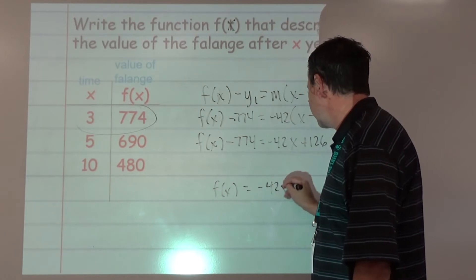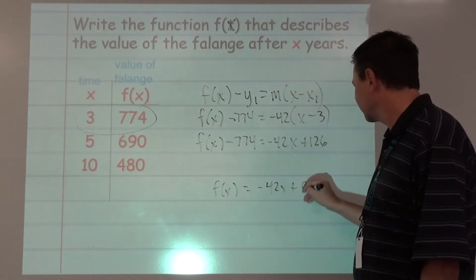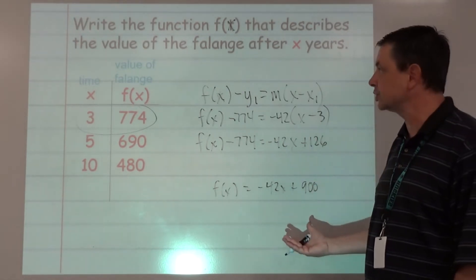Add 774 to both sides. It's a like term over here, so we're going to get f(x) equals negative 42x. I add 774 and get 900. That's our function.